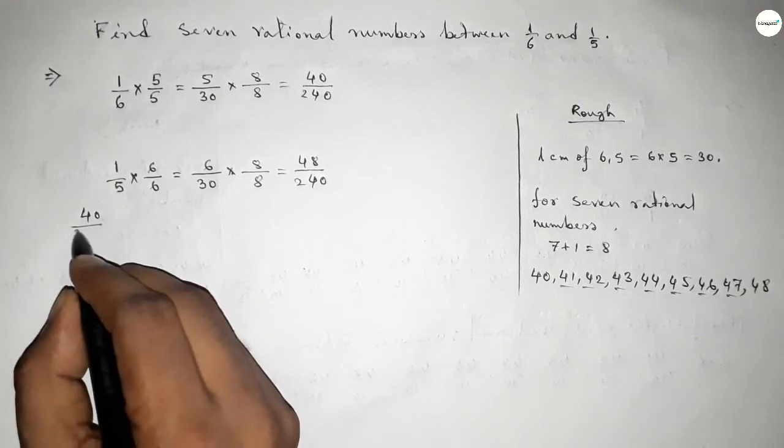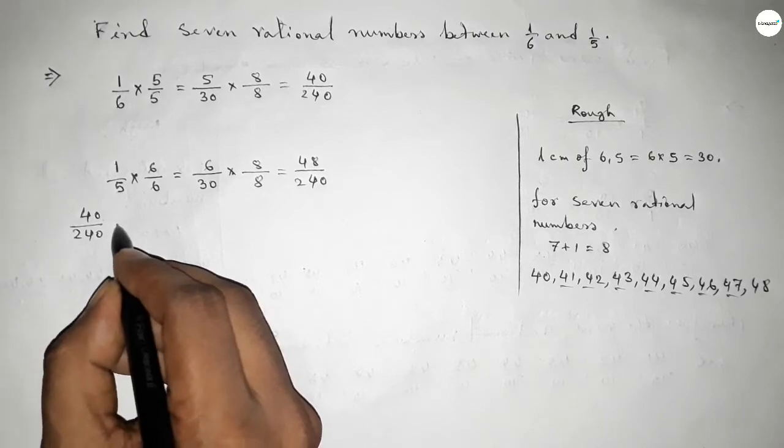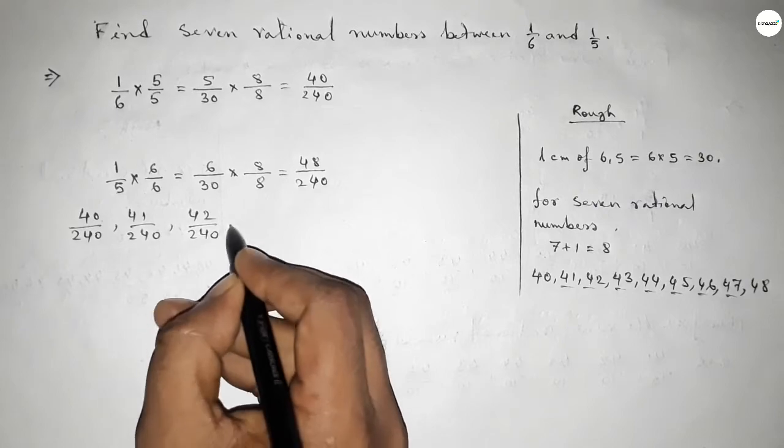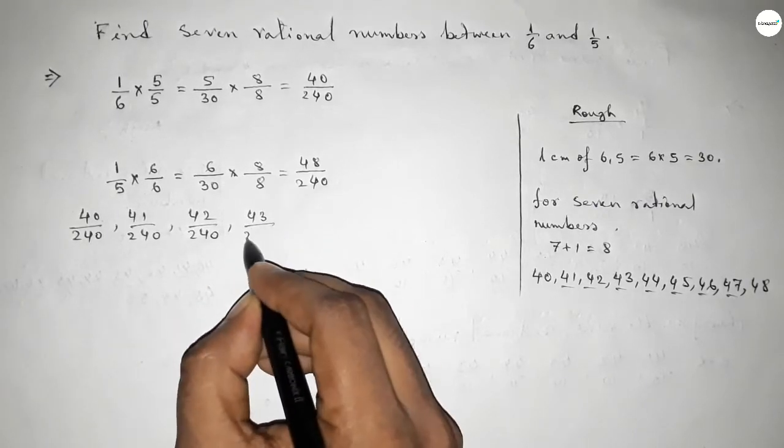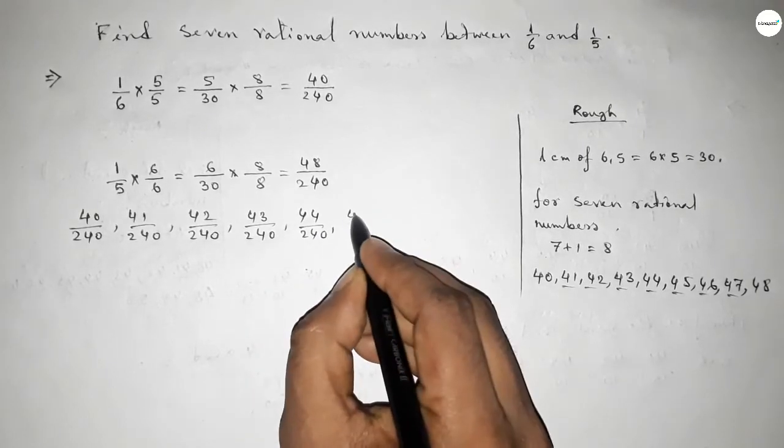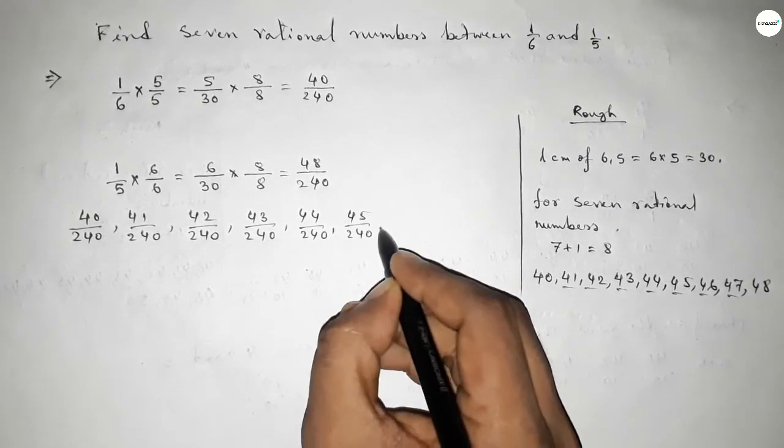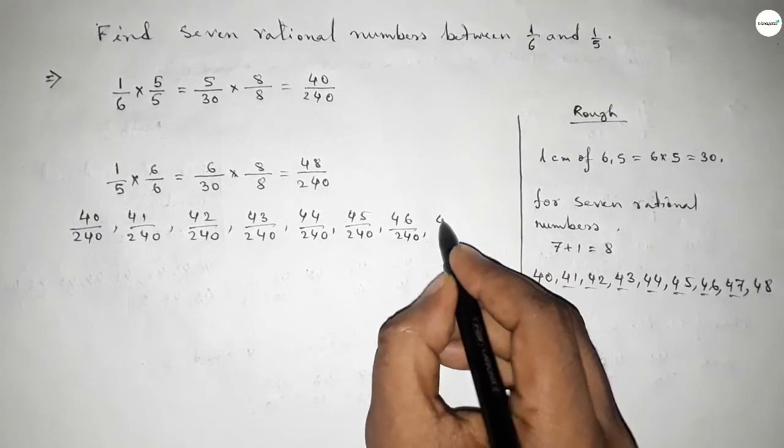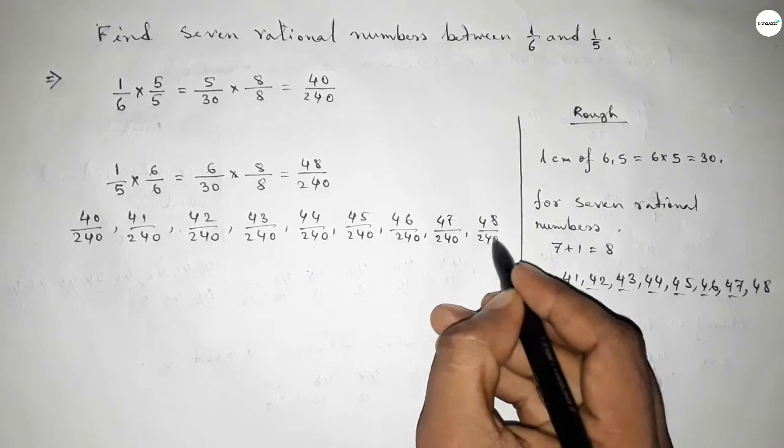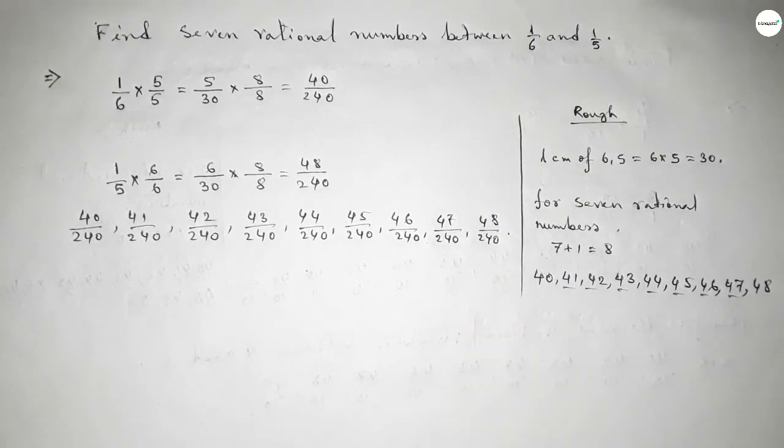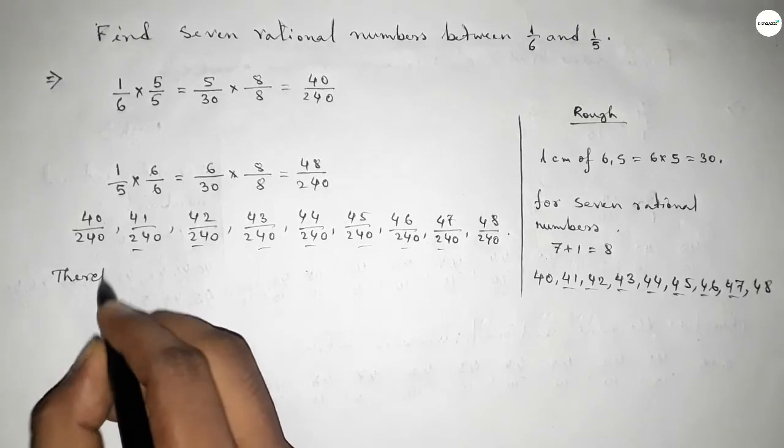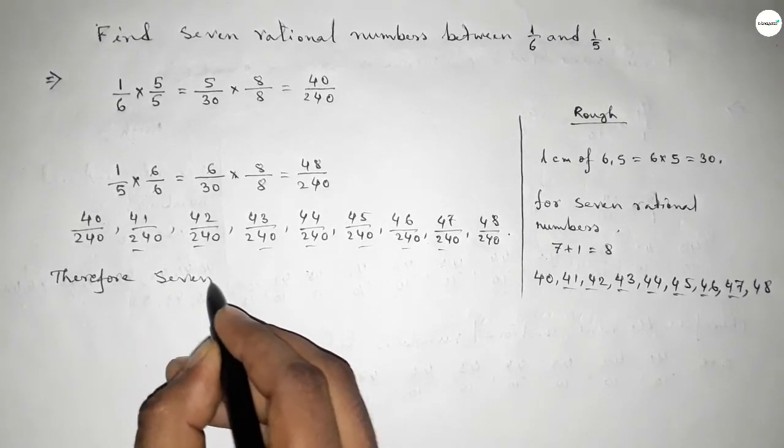Here all the rational numbers are 40 over 240, 41 over 240, 42 over 240, 43 over 240, 44 over 240, up to the last one which is 48 over 240. And these are the required seven rational numbers between 1 over 6 and 1 over 5.